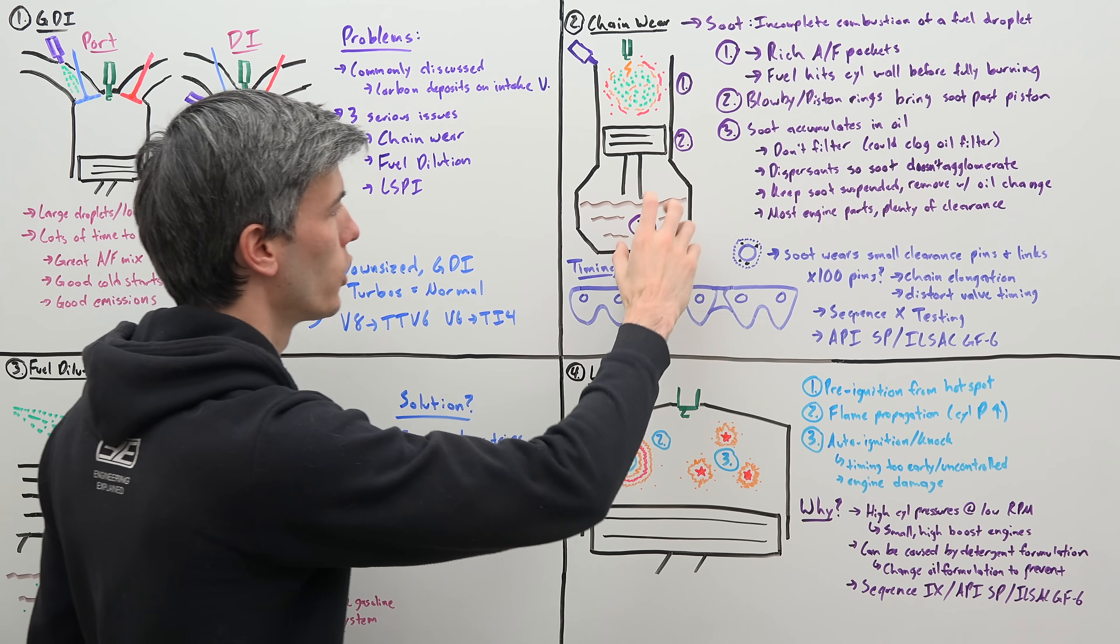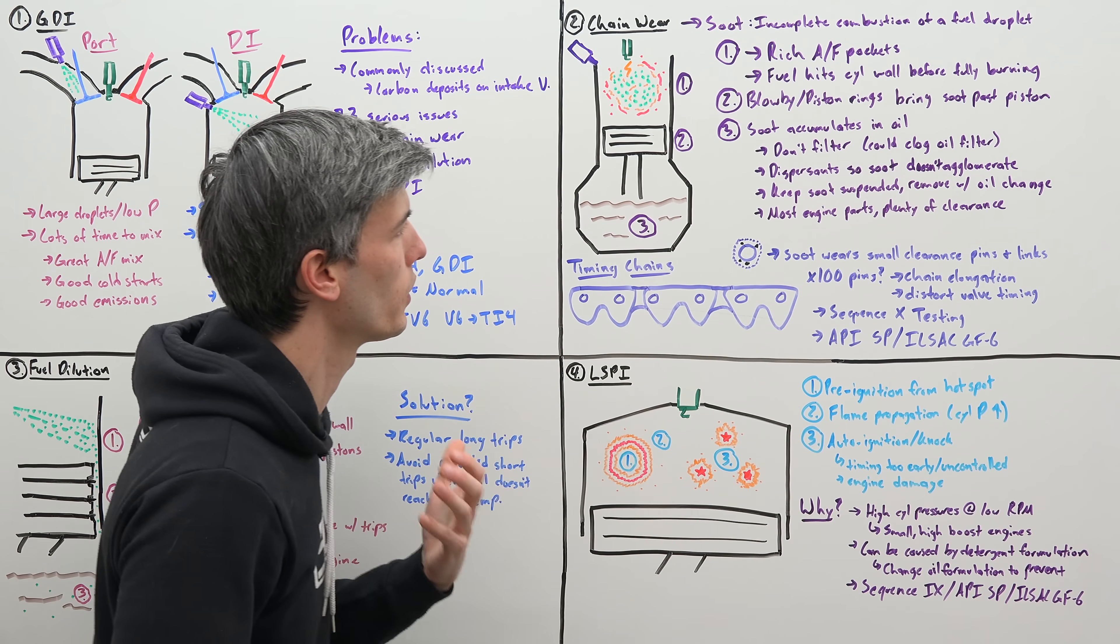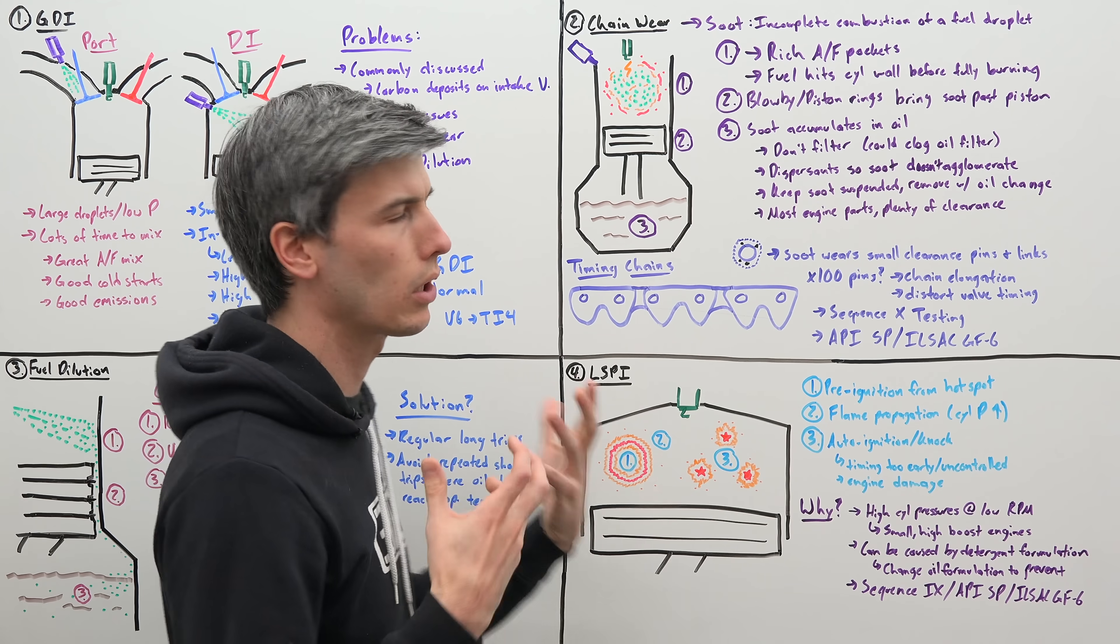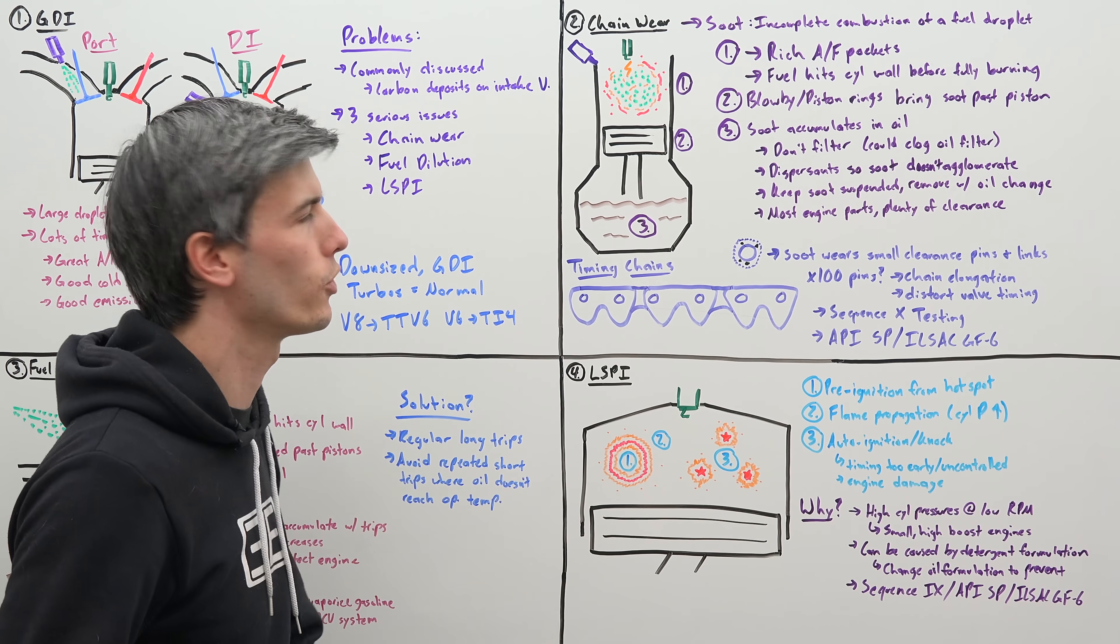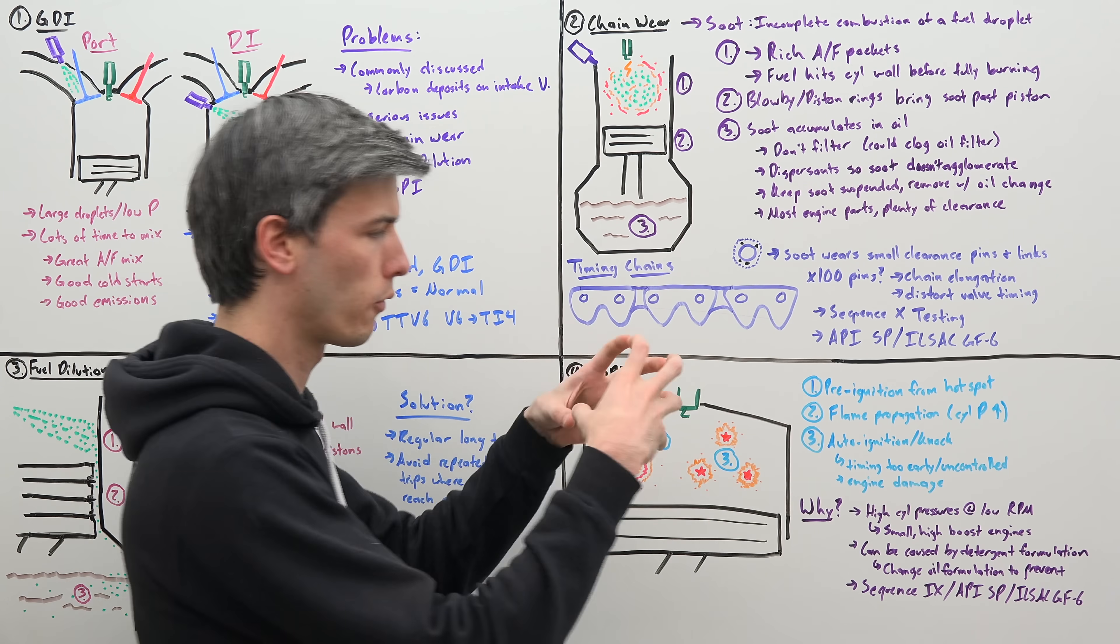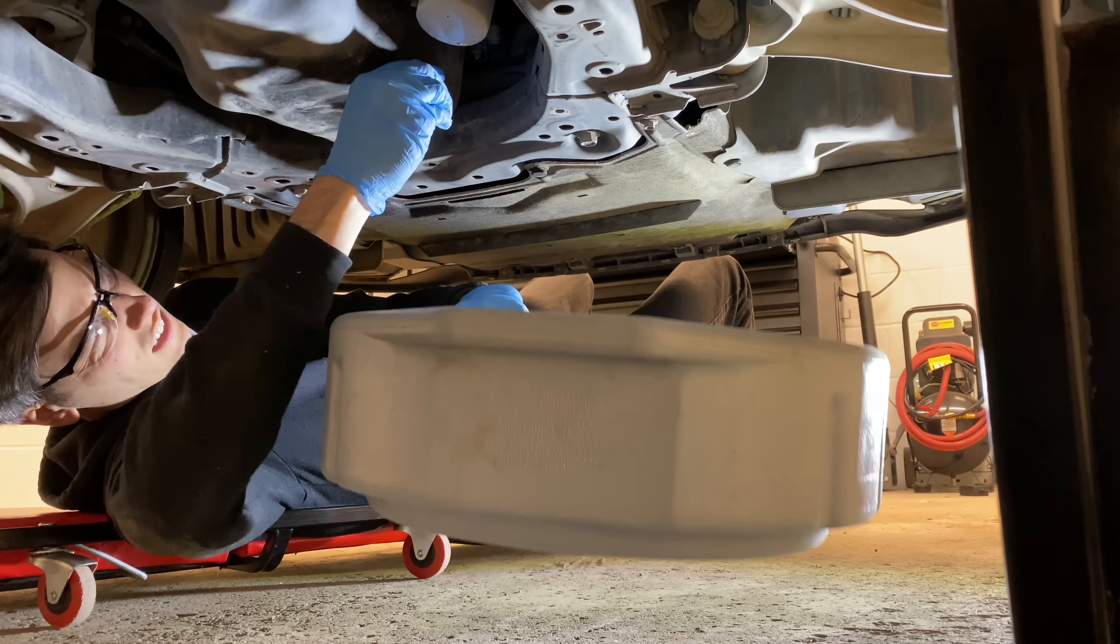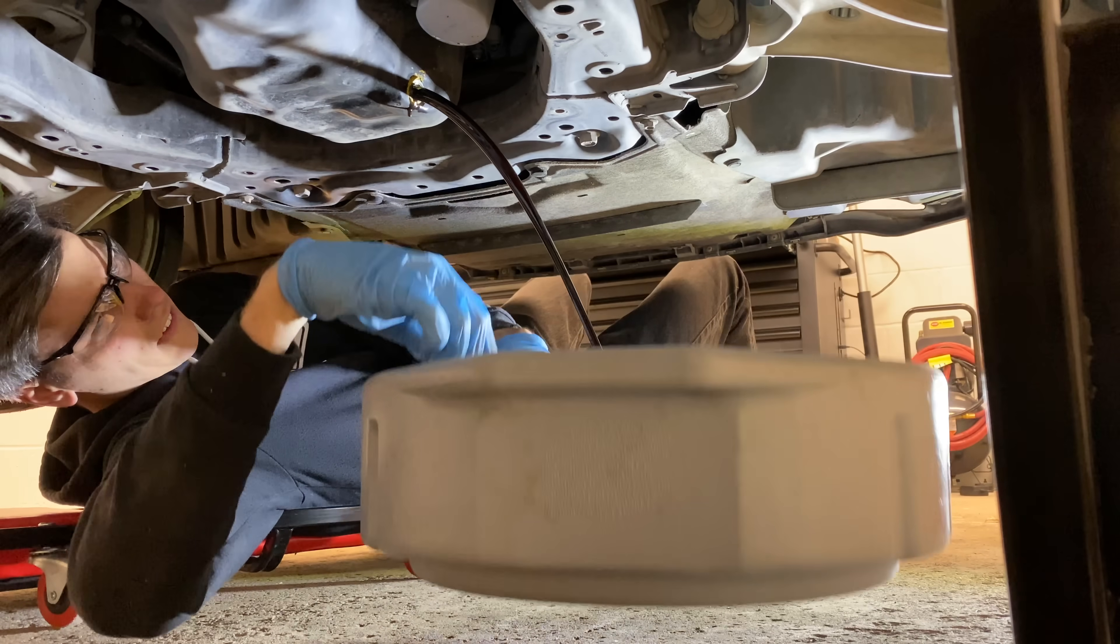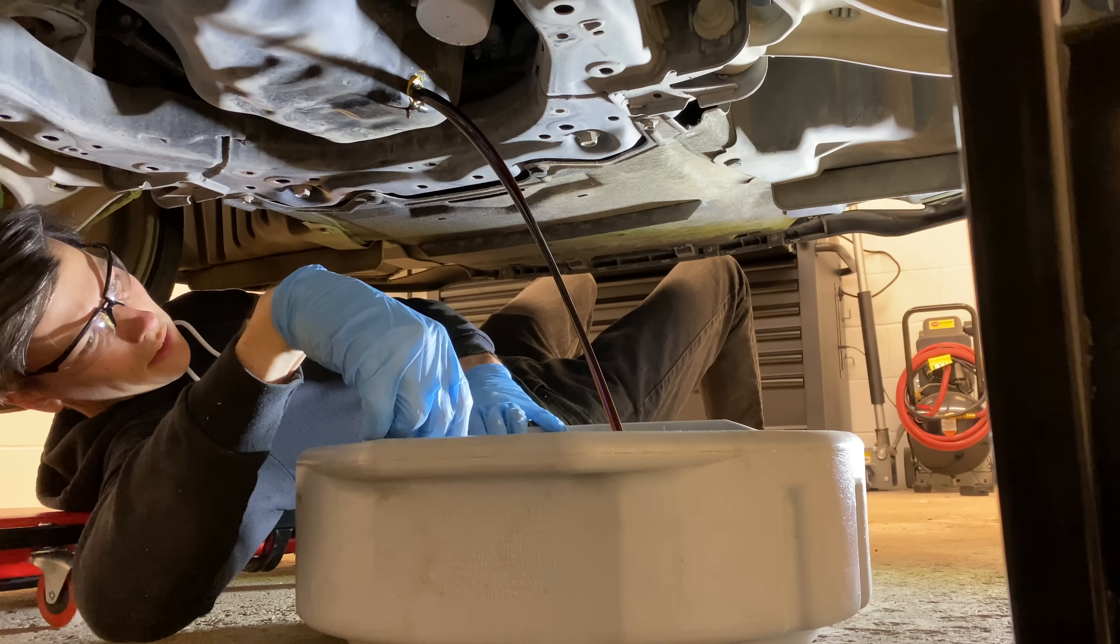Then you have blow-by and your piston rings bringing this soot down into your crankcase. And so that soot then accumulates in your oil. Now you might think, well, can't you just filter this out? You don't actually want to filter out the soot. You could end up clogging up your oil filter and run into larger problems. So instead you use dispersants in the oil so that that soot doesn't agglomerate. And by doing so, you're just trying to keep that soot floating within the oil so that eventually when you do change your oil, you just remove all that soot.